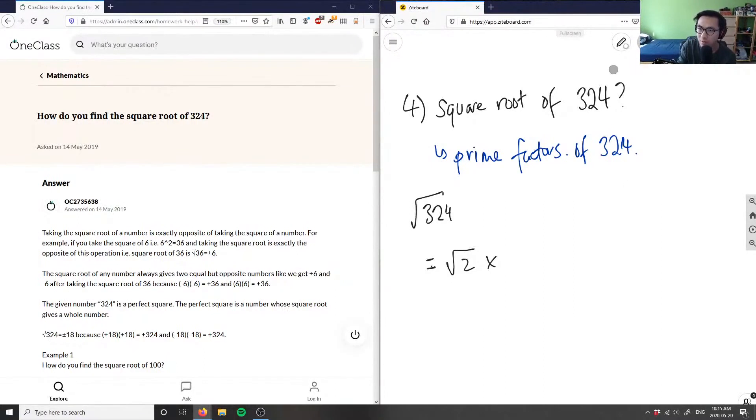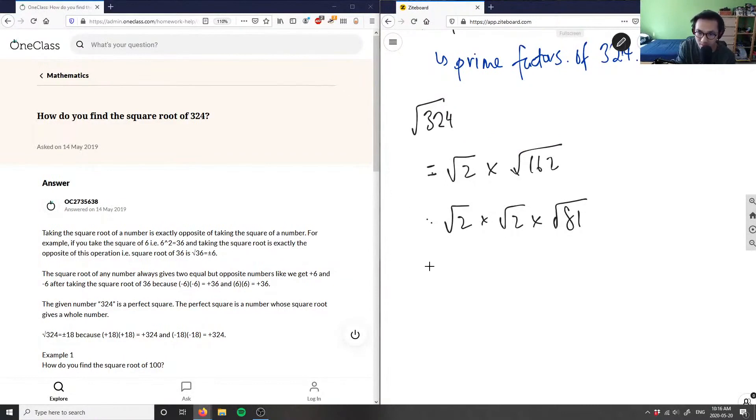If you're not given a calculator, this here is root 162. And then I can break down this root 162 even further. 162 divided by 2, I believe, is 81. 2 times 8 here is 16, and 2 times 1 here is 2. Root 81.